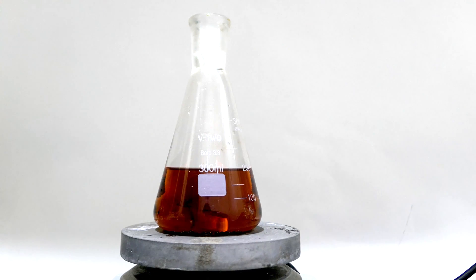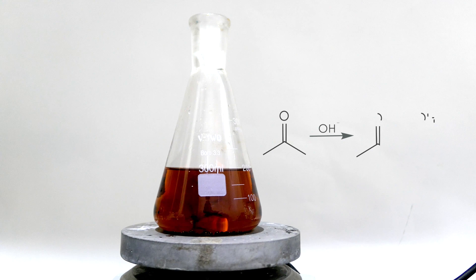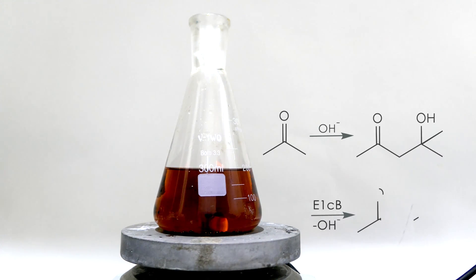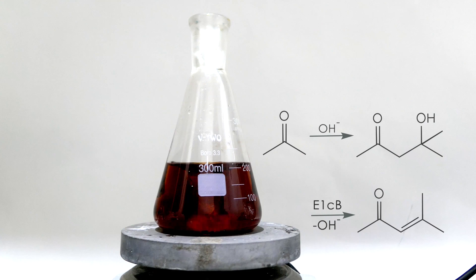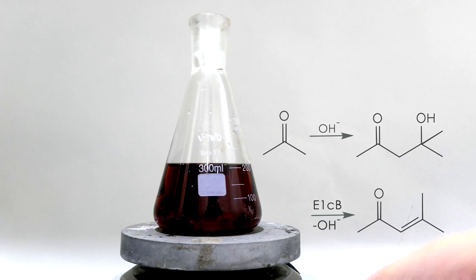So what's happening in the reaction flask? This is the second step of aldol condensation. Usually, beta-hydroxycarbonyl compounds lose water to form an alkene under basic conditions, like potassium hydroxide. But wait a minute, now it's a neutral condition. Why can this compound still dehydrate easily? The key is the elemental iodine.